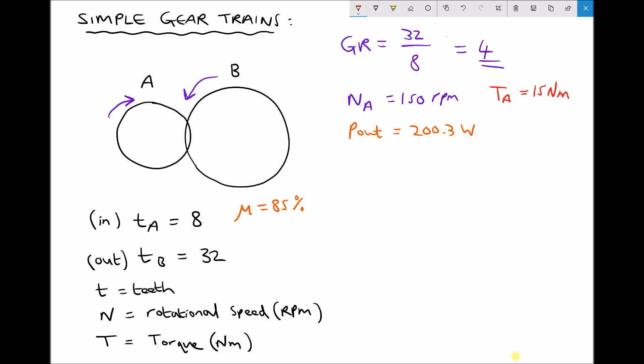So we can return to our power equation because we know that the power out is 2π n subscript b t subscript b over 60. Now we need to rearrange this to make torque the subject.